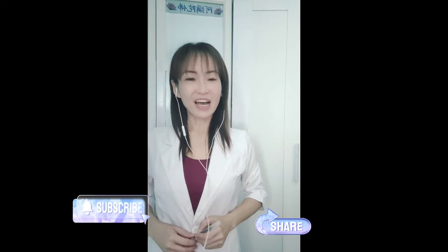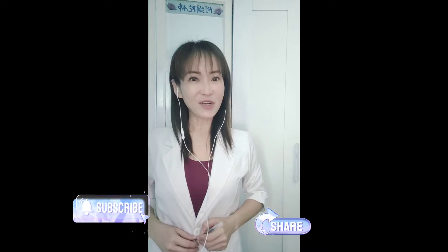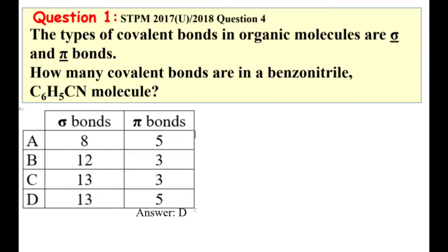Let's go to the first part: how are we going to determine the number of sigma bonds and pi bonds of an atom in a molecule? My dear students, there are two questions in our discussions today. This is question one — from this question, we need to determine the number of sigma bonds and pi bonds in benzonitrile.